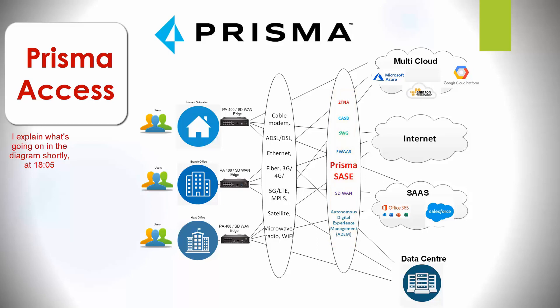Just to give you a fundamental of Prisma Access: it's made up of a security layer and a network layer where you can turn on SD-WAN for all your sites. SD-WAN can be put into your office and provide the connectivity and security for that site.